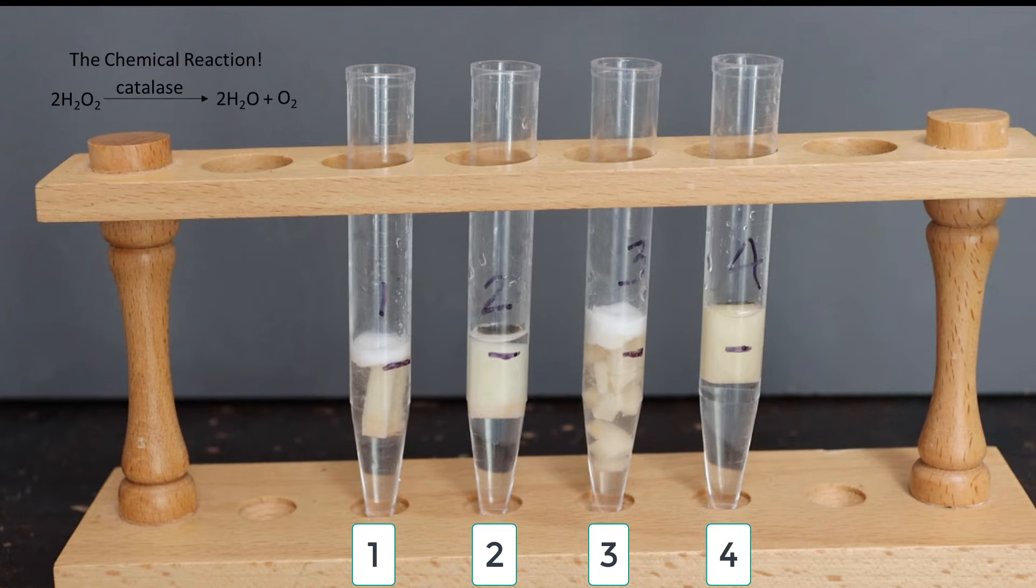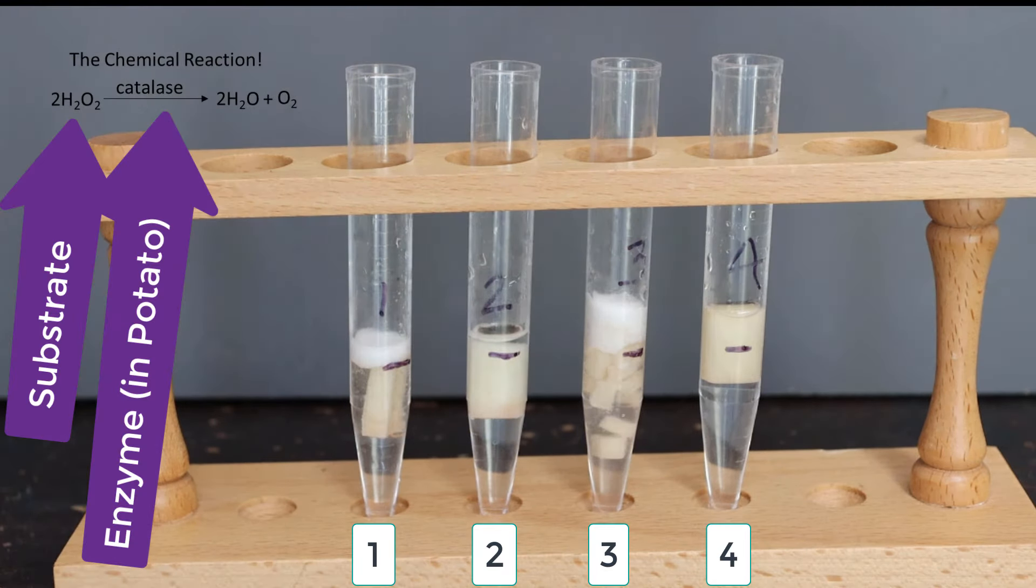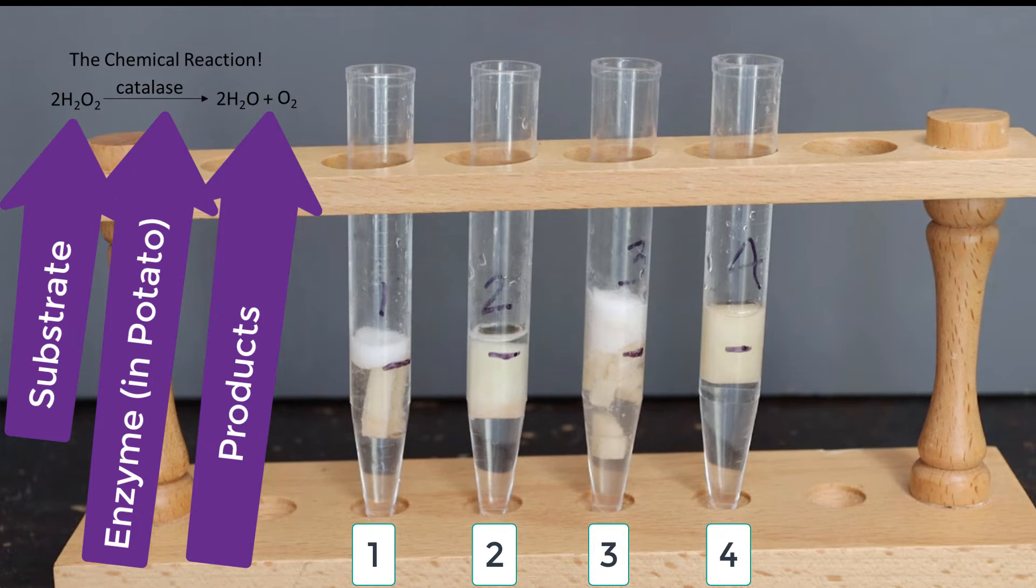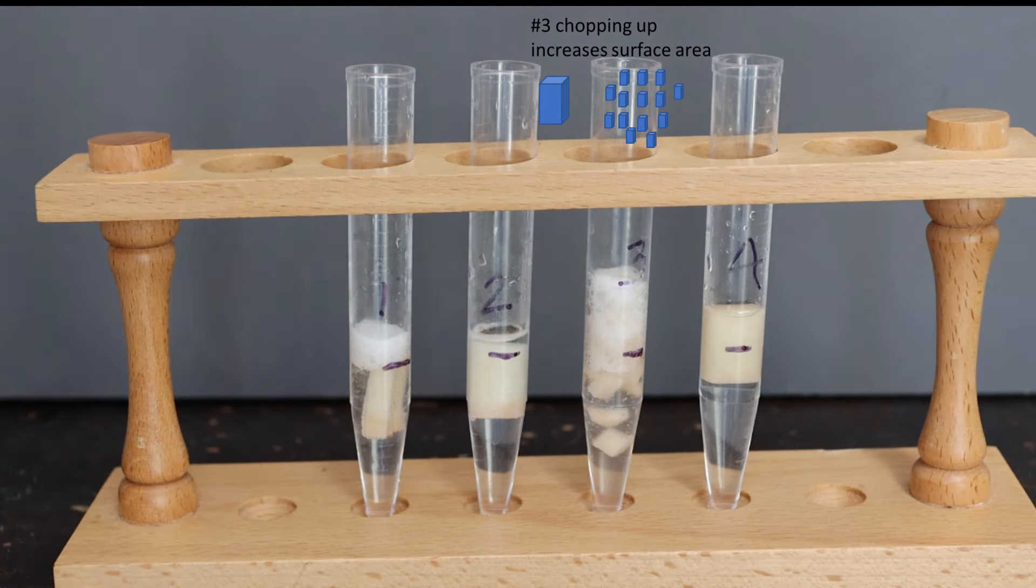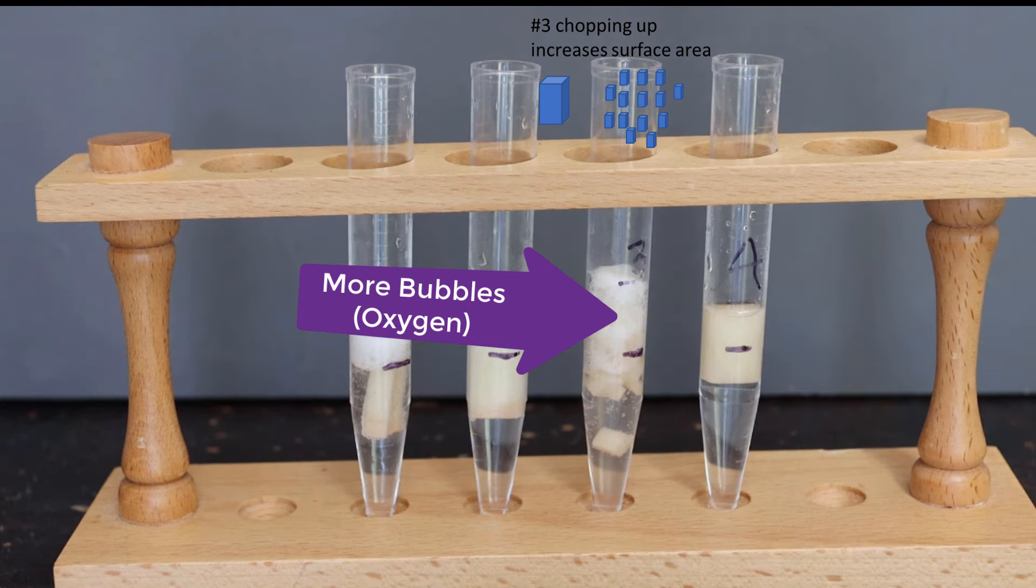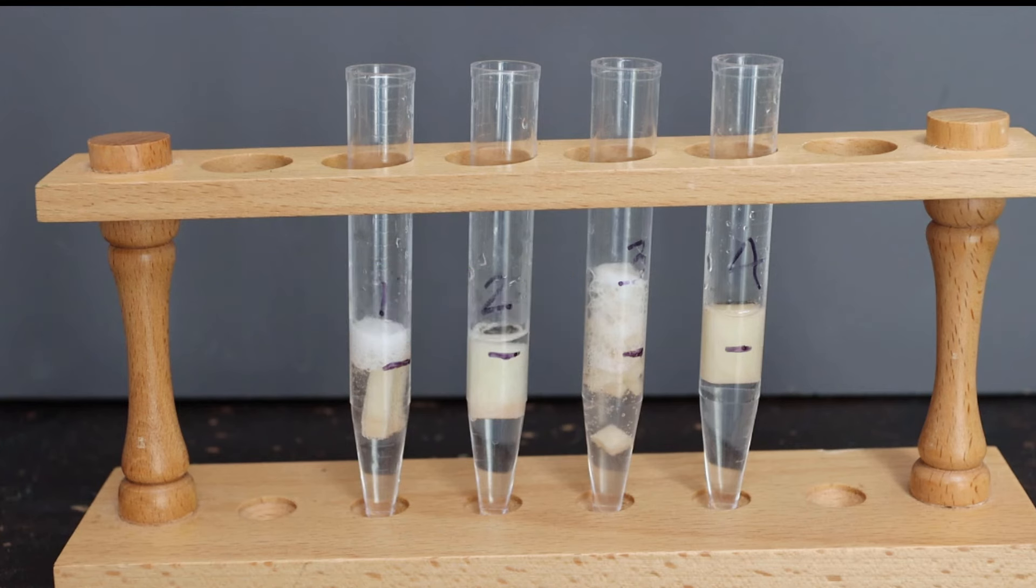Then we let them sit and what you see is the enzyme taking action and doing the chemical reaction, which is taking the hydrogen peroxide (H₂O₂) and converting it into water and oxygen. That enzyme catalase is found inside the potatoes. And you can see in test tube three that by chopping up the potato and increasing the surface area, we allowed more of the enzyme catalase to come into contact with the substrate, which is hydrogen peroxide, resulting in more bubbles.